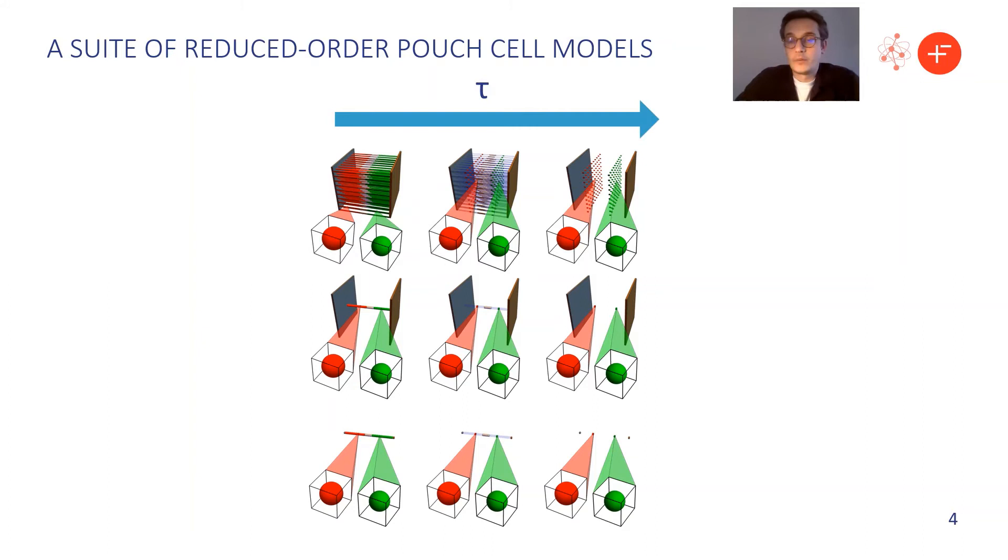Simplifications to the through-cell model typically arise because of disparities in timescales. So within the battery model itself, we've got various different timescales which we can identify. Things like the typical discharge timescale, the diffusion timescales in the electrode or electrolyte, or the reaction timescales. And by exploring different limits where one timescale is bigger than another or one timescale is comparable to another, we can develop a whole range of different reduced order models.